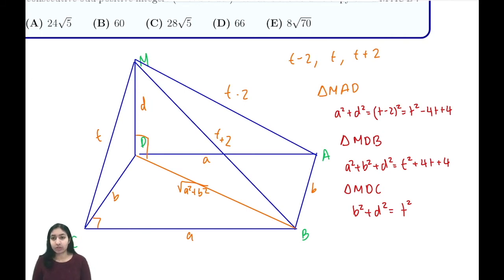So what we want to do is first add this equation and this equation and subtract this equation to find d². That gives us that d² is equal to t² + t² - 4t + 4 - t² - 4t - 4, which is t² - 8t.